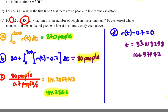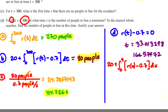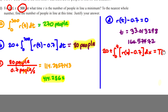We find two critical numbers: approximately T equals 33.013 and T equals 166.575. We also need to test the endpoints T equals 0 and T equals 300. To find the number of people at each time, use the model T of t: 20 plus the integral from 0 to t of R of x minus 0.7, dx. Plug each value into this expression in the calculator.